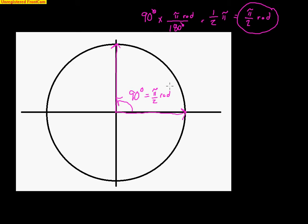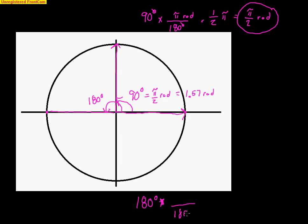The exact answer is π over 2. If you want an approximate answer, just do π divided by 2 on your calculator — it's approximately 1.57 radians. Going all the way over to 180 degrees: 180 degrees times π over 180 degrees — the 180s cancel beautifully and we get π radians. So 180 degrees is π radians, and approximately 3.14 radians.